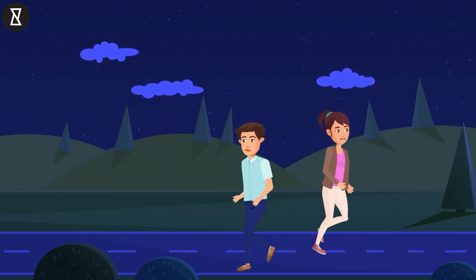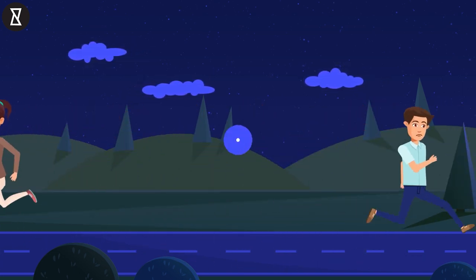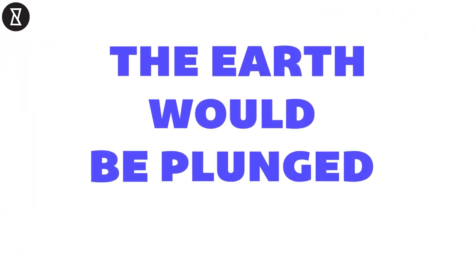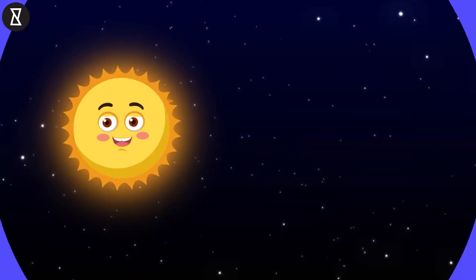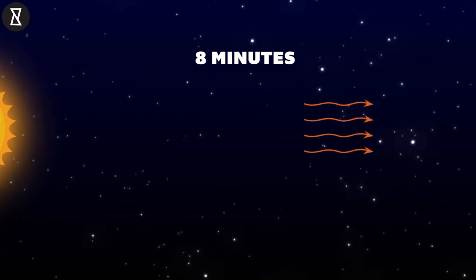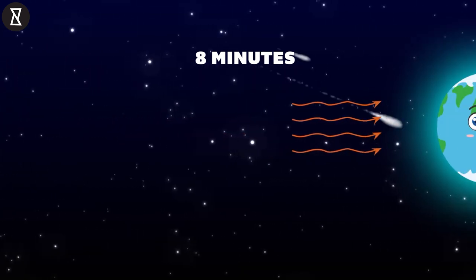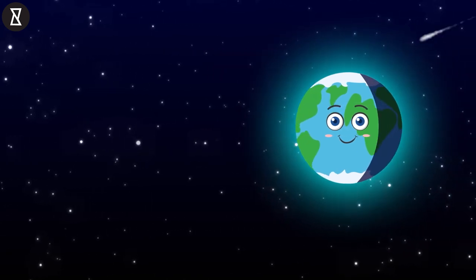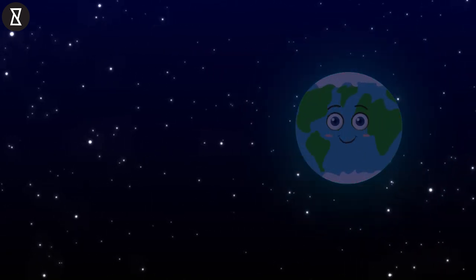Still, it wouldn't be the instantaneous end to life on earth that you might think. The earth would plunge into darkness. Light takes roughly eight minutes to reach earth from the sun. For that reason, if the sun disappeared, we'd still see it in the sky for another eight minutes, after which the earth would go totally dark.